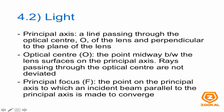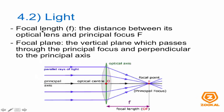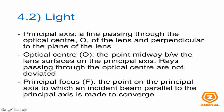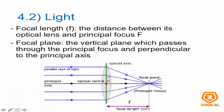Terms you need to know for this part: the principal axis is a line passing through the optical center O of the lens, perpendicular to the plane of the lens. The optical center O is the point midway between the lens surfaces on the principal axis; rays passing through the optical center are not deviated. The principal focus F is the point on the principal axis to which an incident beam parallel to the principal axis converges. The focal length is the distance between the optical center and the principal focus F.